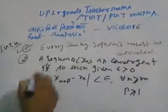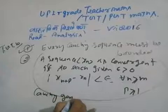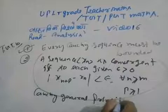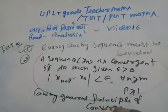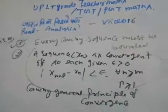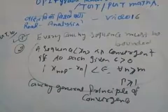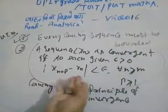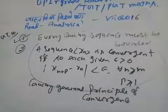This is the question of the Cauchy general principle of convergence. The Cauchy general principle of convergence states: |xn+p - xn| is less than epsilon. This is the Cauchy general principle of convergence and can be given as an option in exams.